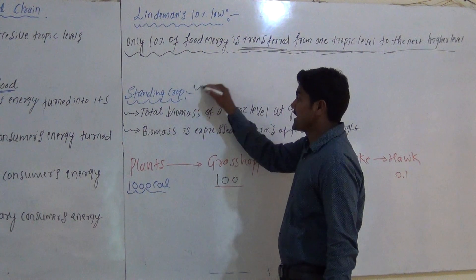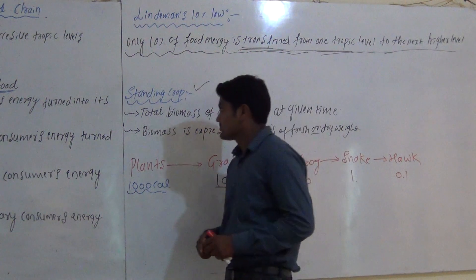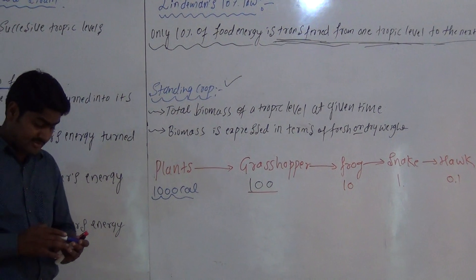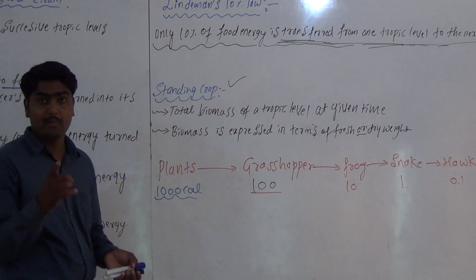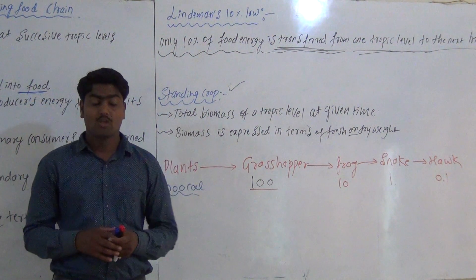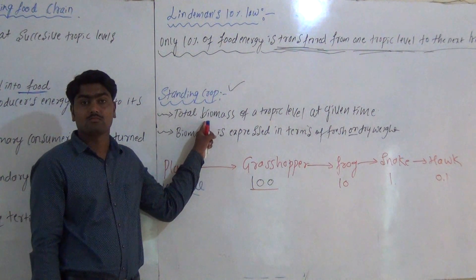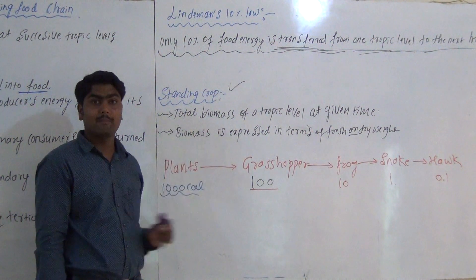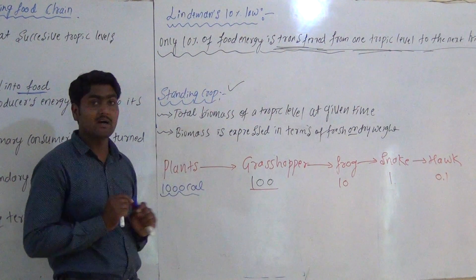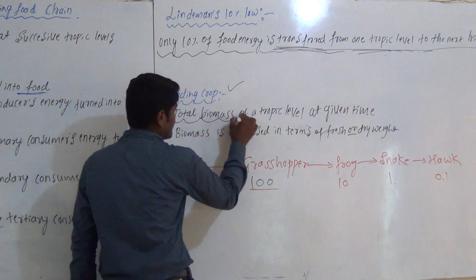One more concept is called Standing Crop. Standing Crop refers to the total biomass of a Trophic Level at a given time. Biomass is the organic matter produced by living things. So Standing Crop is the total biomass of a Trophic Level at any given time.